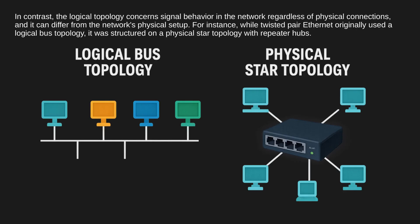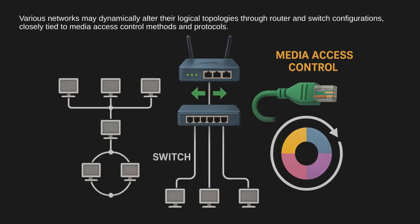For instance, while twisted pair Ethernet originally used a logical bus topology, it was structured on a physical star topology with repeater hubs. Various networks may dynamically alter their logical topologies through router and switch configurations, closely tied to media access control methods and protocols.